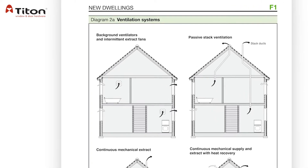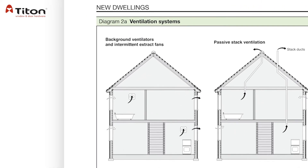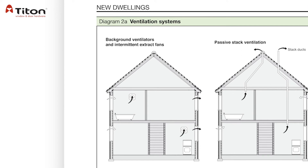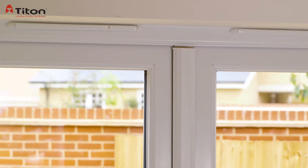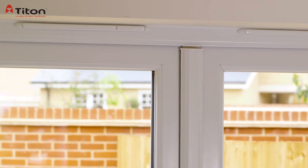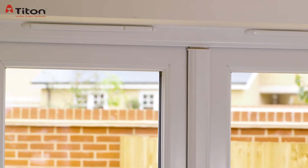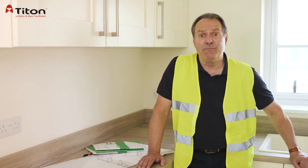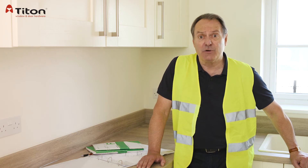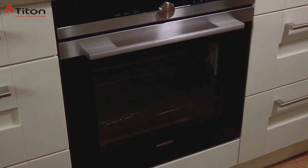When a property complies with the building regulations via System 1 — which is localised extract fans in the kitchen and bathrooms and most commonly trickle vents in the windows to provide background ventilation — there are a number of things that need to be considered for compliance of background ventilation, in addition to the checks required for the extract fans.